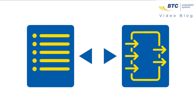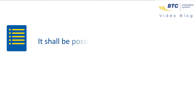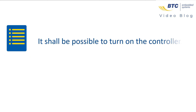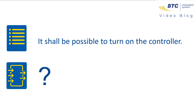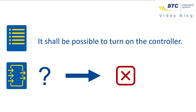Let's have a look at the following requirement of an abstract controller: 'It shall be possible to turn on the controller.' Basically, it's clear what the purpose of this requirement is. However, it's unclear what has to be done to turn a controller on. Is it a button, a flip switch, or even voice controlled? Since this requirement does not mention this, I cannot derive an interface definition from it.